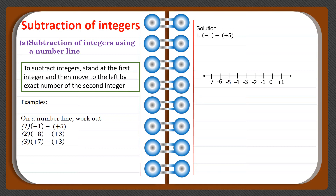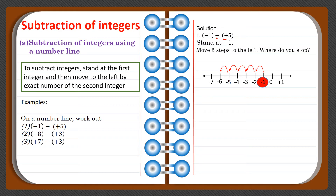On the number line, we put integers as usual and stand at minus one. We move five steps to the left because we are subtracting. Remember: when minus is followed by plus, the sign becomes minus. So we have minus one minus five. We move to the left — one, two, three, four, five — and stop at minus six. Therefore, minus one minus positive five equals minus six, or negative six.